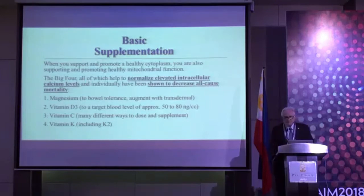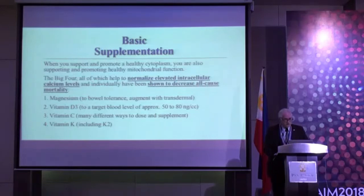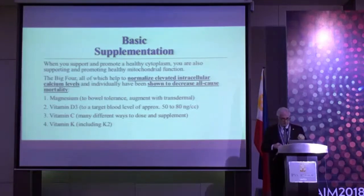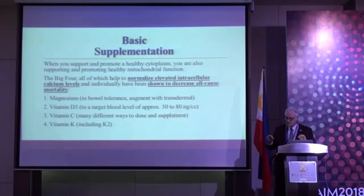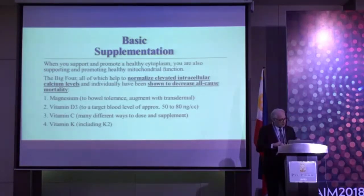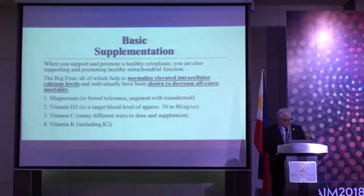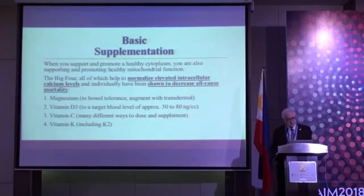With vitamin D3, aim for a level of roughly 50 to 80 nanograms per cc. Vitamin C and vitamin K complete the Big Four. Each one of these supplements by itself decreases all-cause mortality — each one decreases your chance of dying from anything — which means each of these four things is positively impacting oxidative stress in every cell of your body.